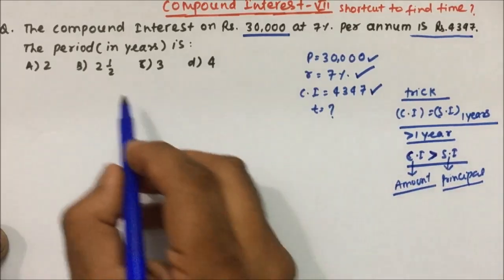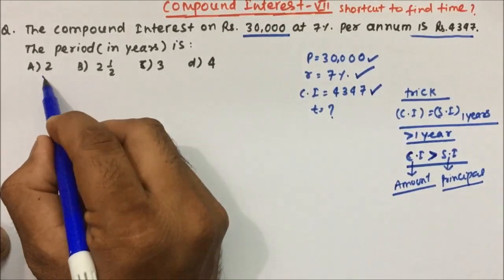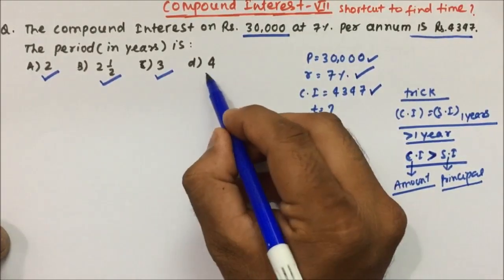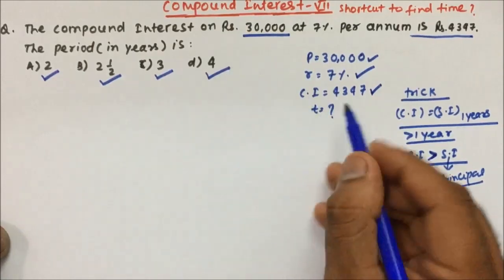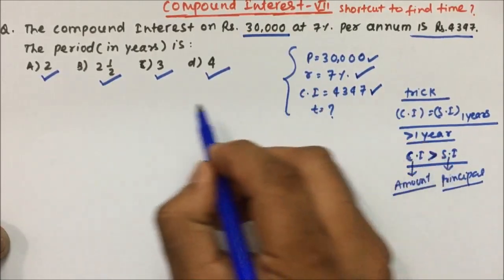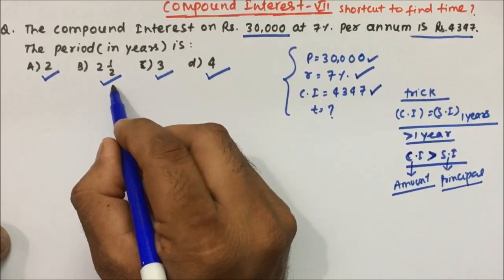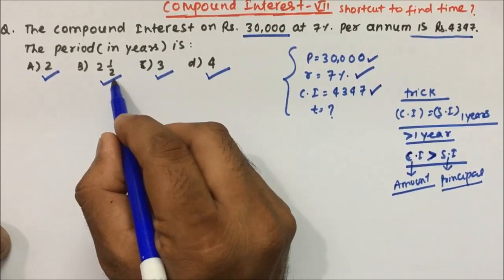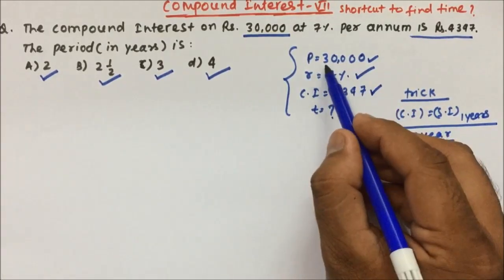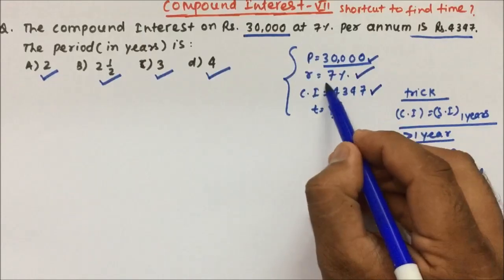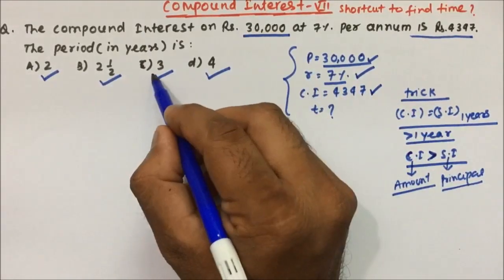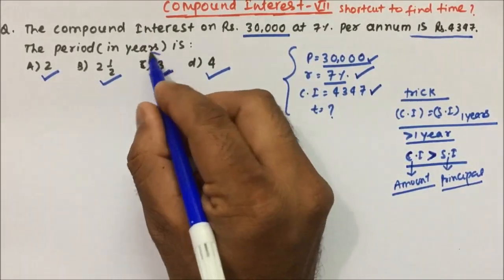The options given are: two years, two and a half years, three years, and four years. We will try to eliminate options, and whichever option remains after eliminating will become our answer. Principal is 30,000 and rate is 7%. Let's take option C first.